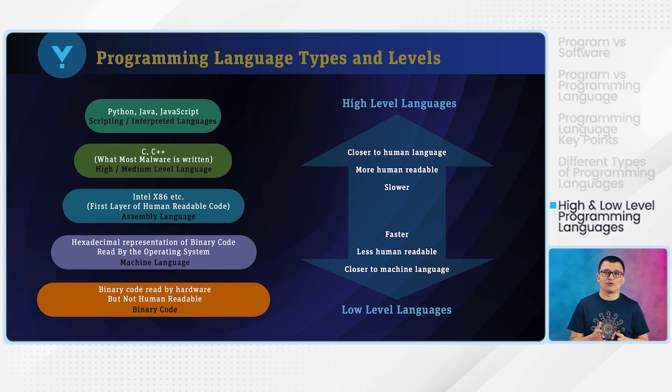High-level programming languages also have some disadvantages — the higher the level, the slower the language becomes. Processing, compiling, and running it will be much slower. But if the programming language is low-level, it is much faster because it's closer to binary codes and machine language. In our next video, you will be introduced to terms such as machine language and binary, and you will understand why languages closer to machine language are the fastest and why they are harder to read. Thank you so much — I will see you all in the next video.